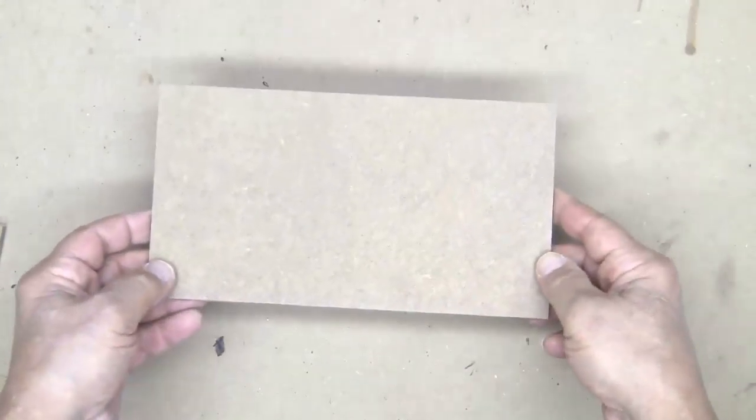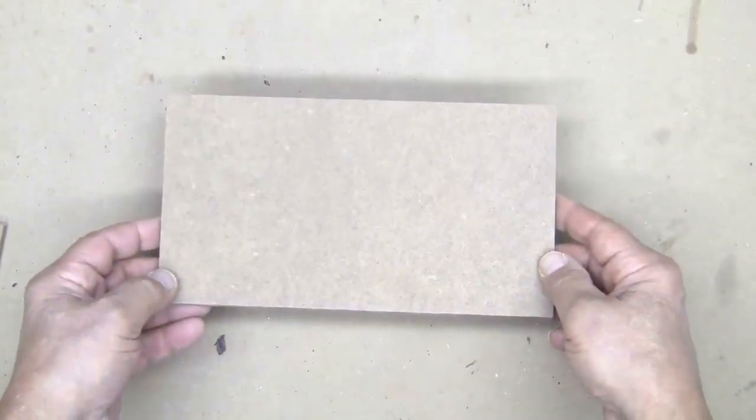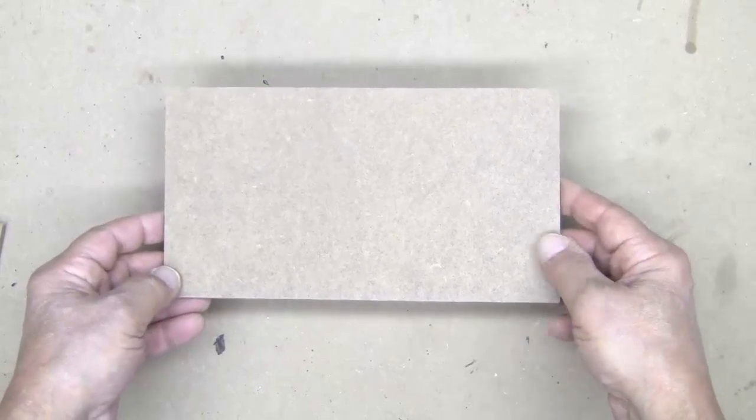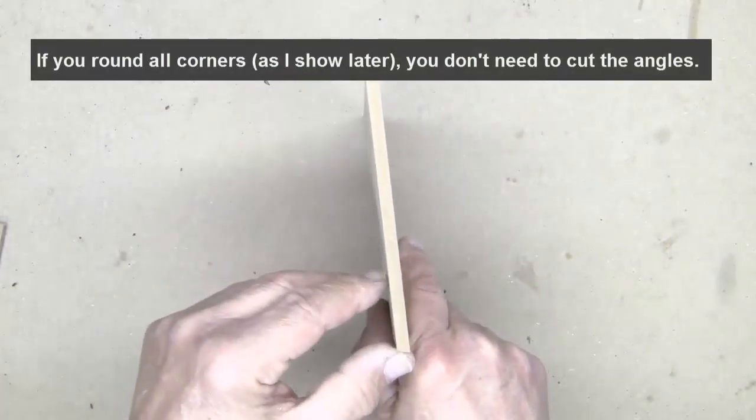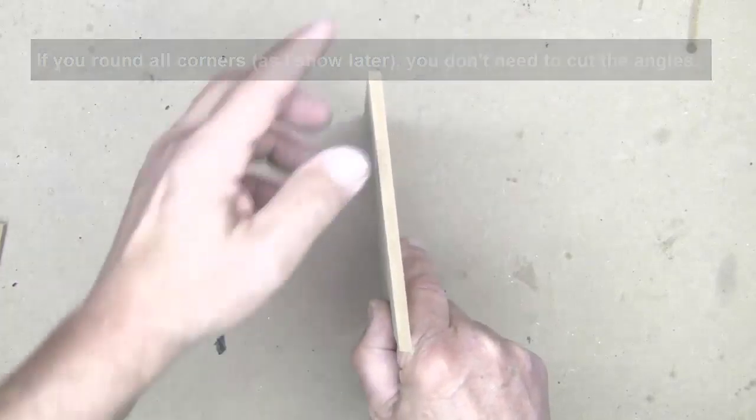And finally, we have the top. The top's a little larger than the bottom. It's 5 1/8 by 9 1/2, and you'll notice that the 2 angles, I have 2 10-degree angles cut on this one.